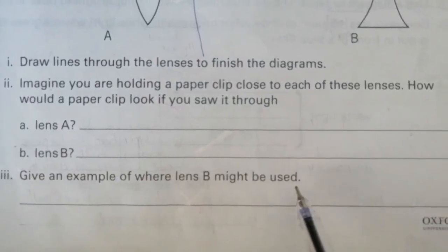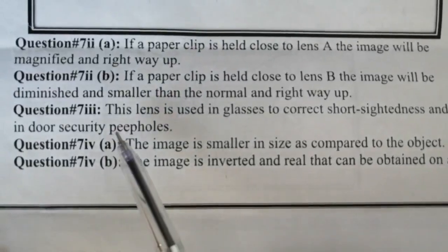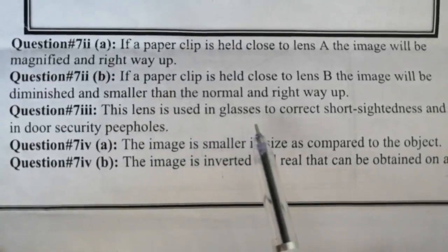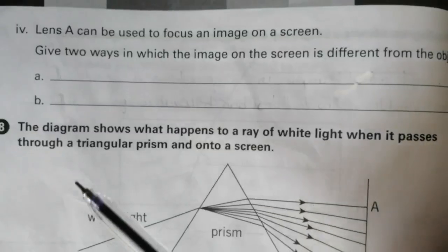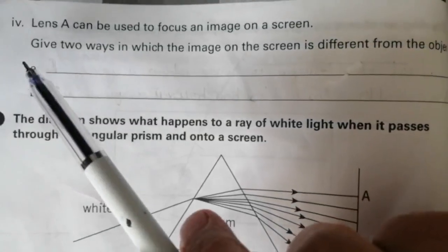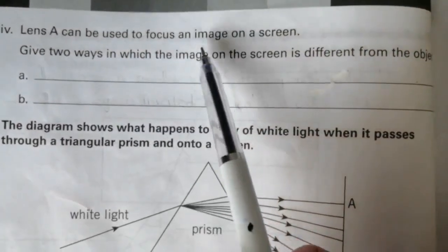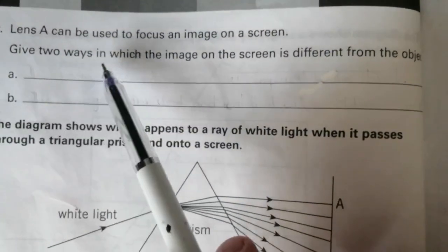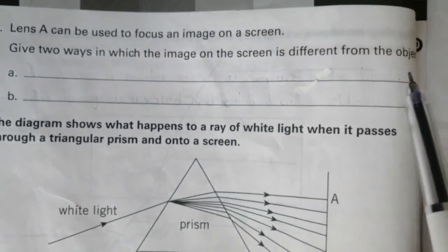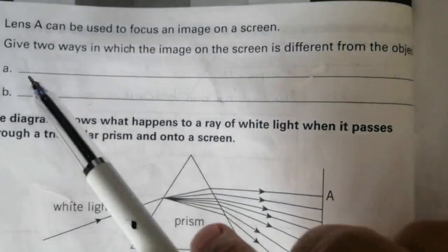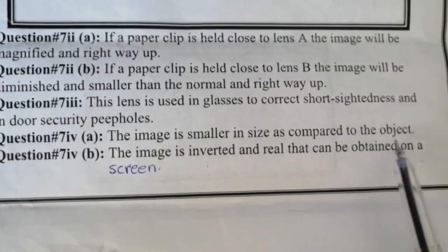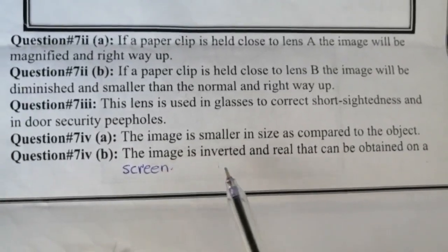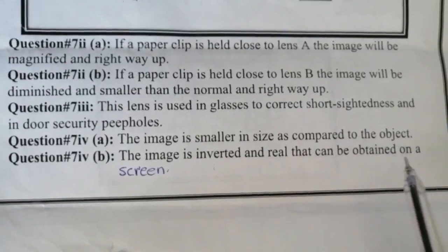Question number 7, part 3: give an example of where lens B might be used. Lens B is used in glasses to correct short-sightedness and in indoor security peepholes. Part 4: lens A can be used to focus an image on a screen. Give two ways in which the image on the screen is different from the object. A: the image is smaller in size compared to the object. B: the image is inverted and real, and can be obtained on a screen.